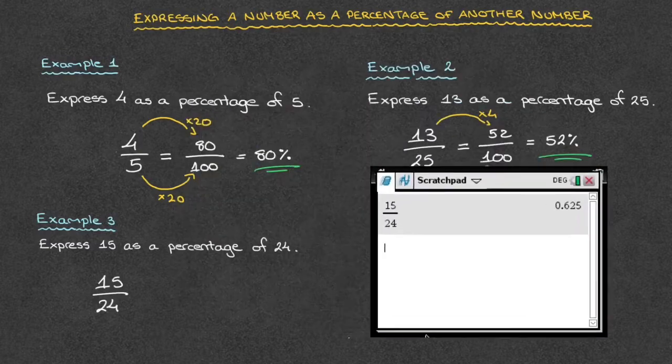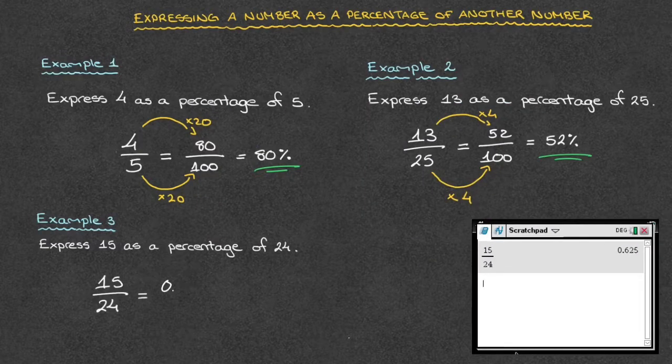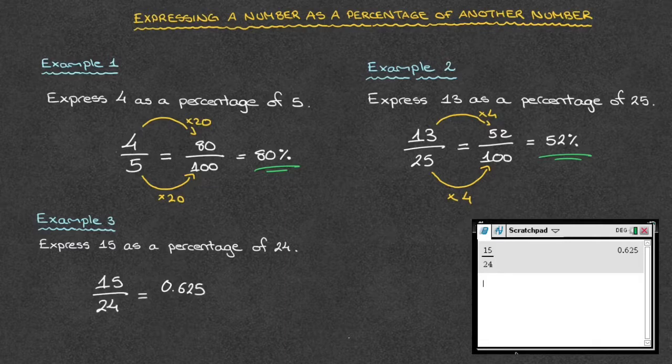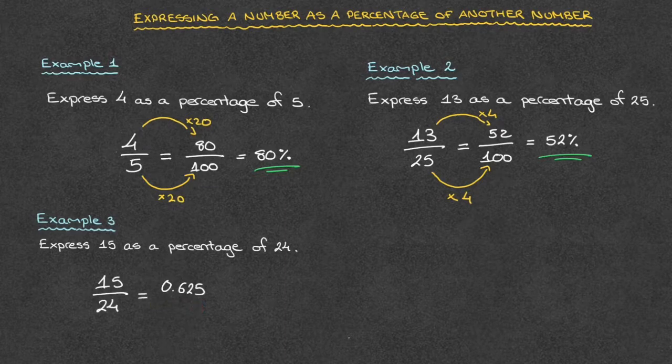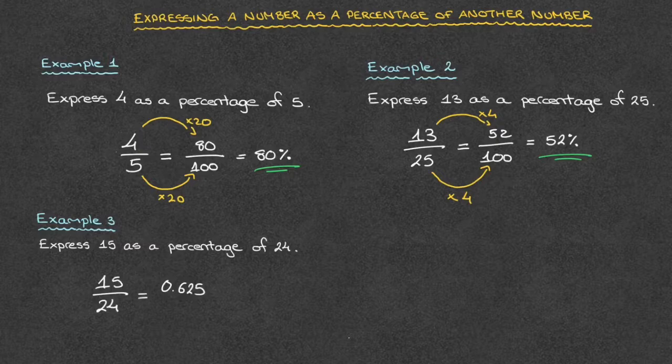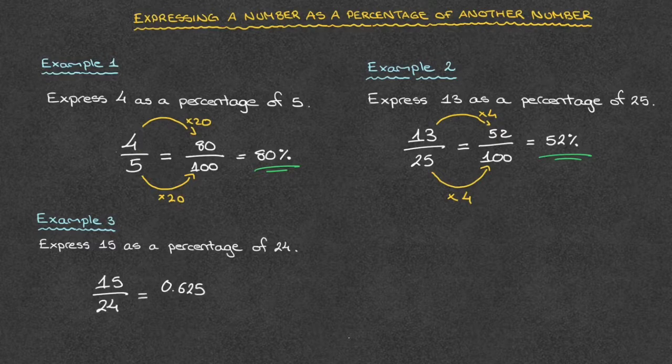And we calculate 15 divided by 24. And in doing so, we find that that equals 0.625. And if you're comfortable converting decimals into percentages, you can probably already tell that this is 62.5%. But if you're not comfortable in doing that, here's a quick trick.